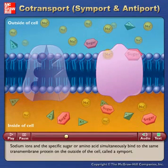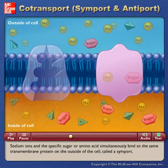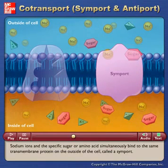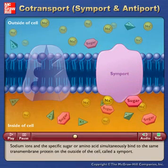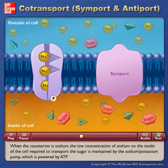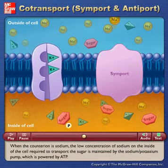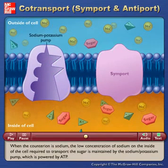Sodium ions and the specific sugar or amino acid simultaneously bind to the same transmembrane protein on the outside of the cell, called a symport. When the counter ion is sodium, the low concentration of sodium on the inside of the cell required to transport the sugar is maintained by the sodium-potassium pump, which is powered by ATP.